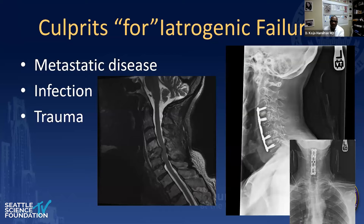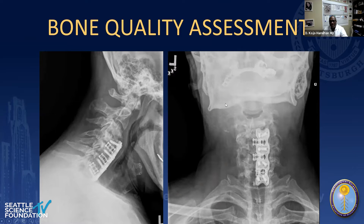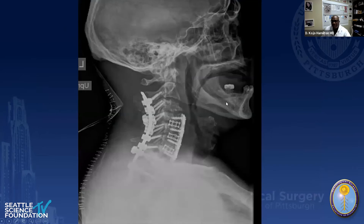Culprits of iatrogenic failures include metastatic disease, infection, and trauma. Surgery for focal metastatic disease can lead to poor maintenance of alignment if not stabilized, and bone quality assessment is critical. A total collapse of a multi-level ACDF in somebody with very poor bone quality just adds to bigger and more taxing surgery.